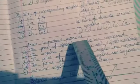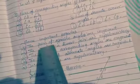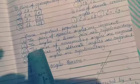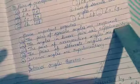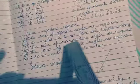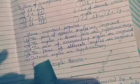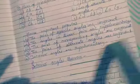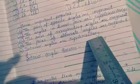Some important properties. Number 1: The pairs of opposite angles are congruent. Number 2: Angles in a linear pair are supplementary. The pairs of corresponding angles are congruent, and the pairs of alternate angles are also congruent. Interior angles are supplementary.